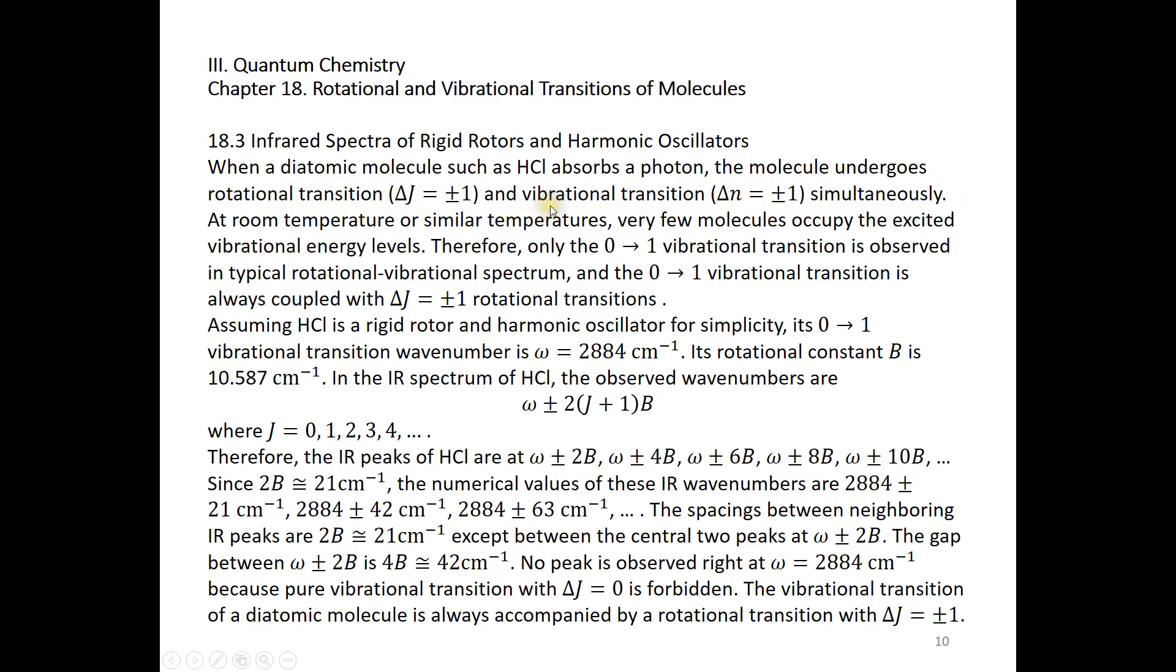For the vibrational transition, delta N must be plus or minus 1. J has to change due to the angular momentum of the photon. N has to change because of the oscillating electric field of the photon.